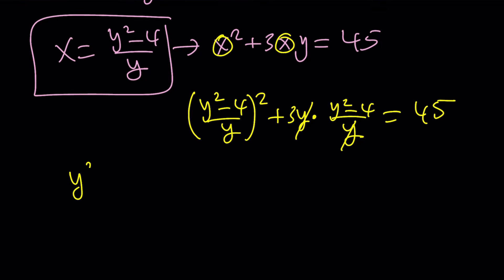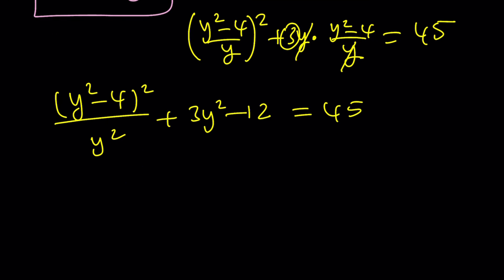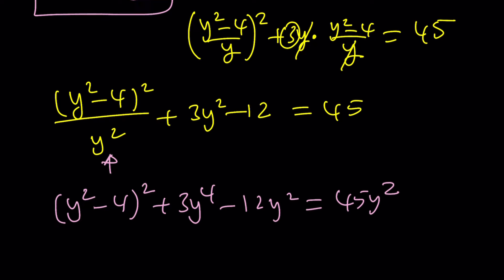Let's go ahead and expand the numerator. We're going to square this and divide by y squared. And then 3 will be distributed. 3y squared minus 12 is equal to 45. And then we're going to go ahead and multiply everything by y squared because we want to get rid of this y squared. If you do that, you're going to get y squared minus 4 quantity squared plus 3y to the fourth minus 12y squared equals 45y squared. Notice that we have to multiply on both sides.